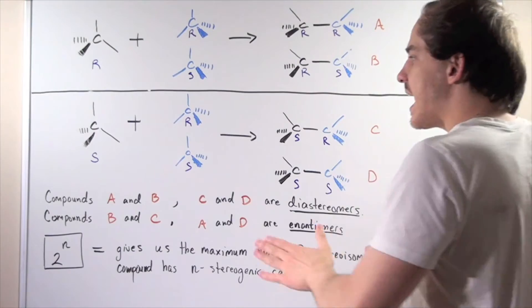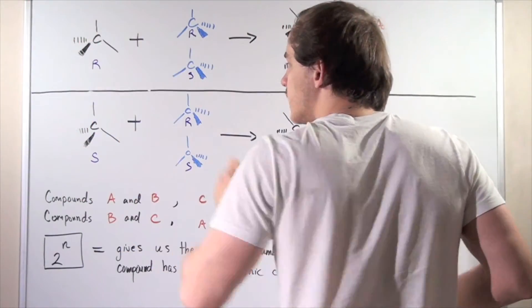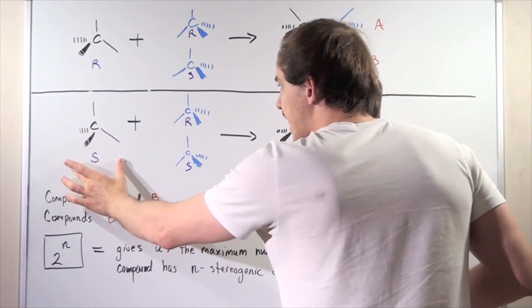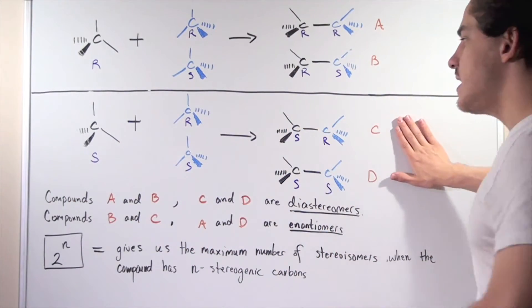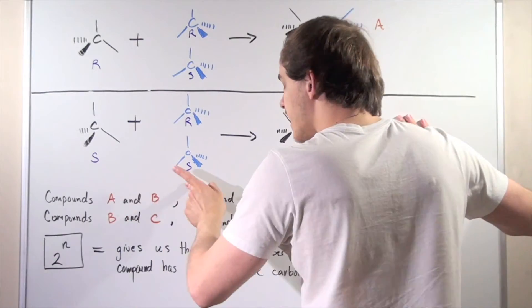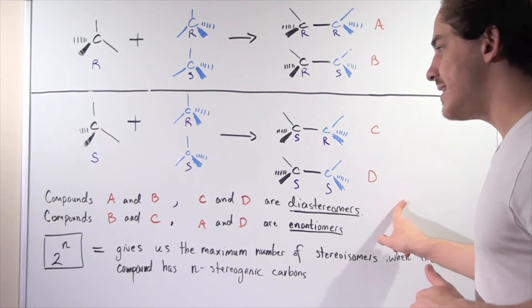The same exact thing happens with the S enantiomer or the mirror image of this R enantiomer. So the S reacts with the R to produce the S-R, let's say it's compound C, and then the S reacts with the S to produce our SS absolute configuration, compound D.